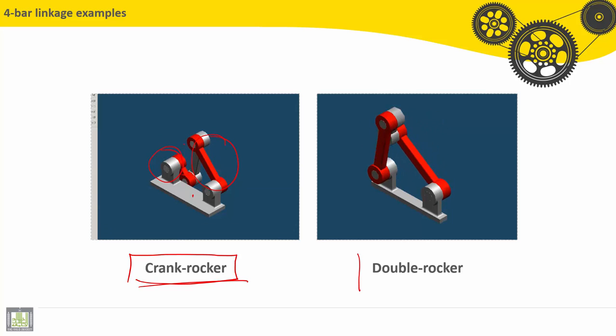For double rocker here, also it is based on four bar mechanism, and we can see here the alternative motion for the input and output link.